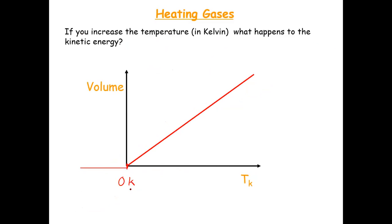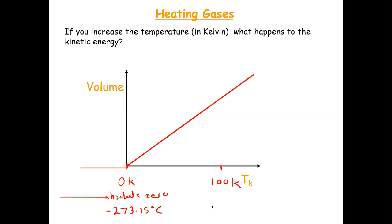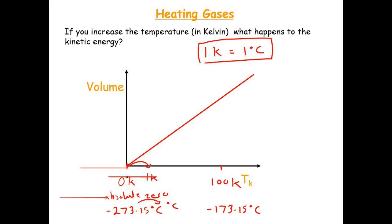Zero Kelvin is the bottom of the Kelvin scale, or absolute zero. Zero Kelvin equals minus 273.15 degrees Celsius. One Kelvin is actually equal to one degree Celsius — if you go up by one Kelvin you are going up by one degree Celsius. They have the same intervals, but zero Kelvin is absolute zero, which is minus 273 degrees Celsius.